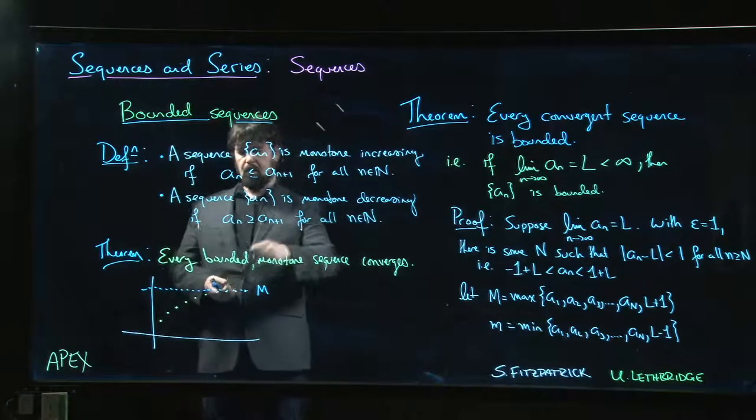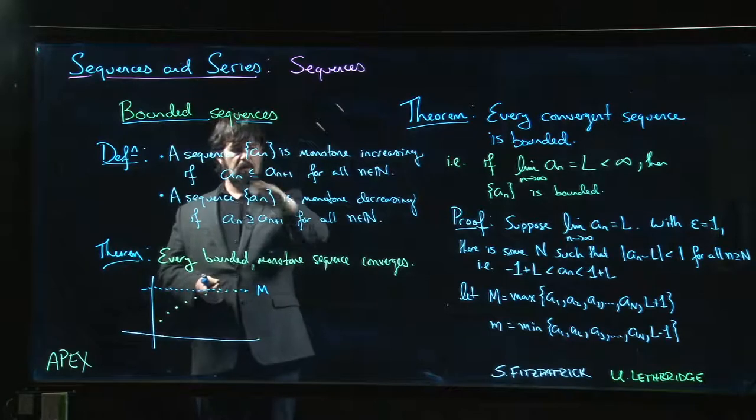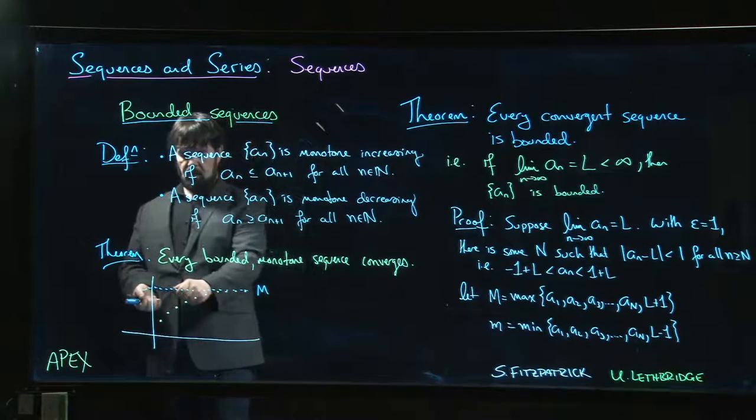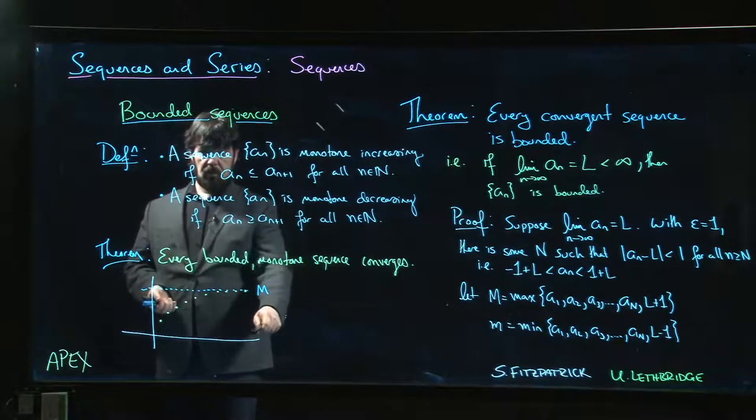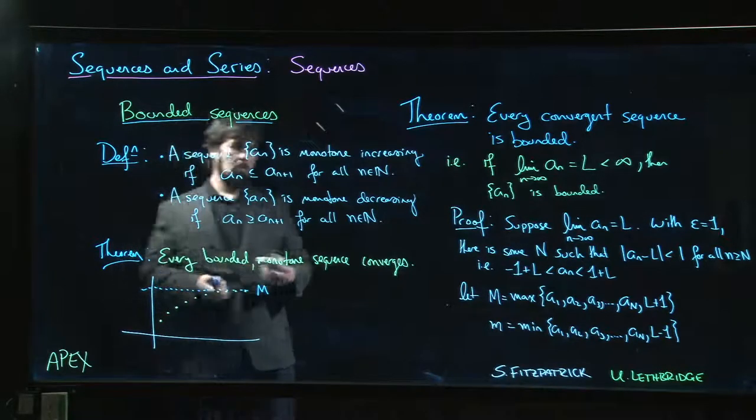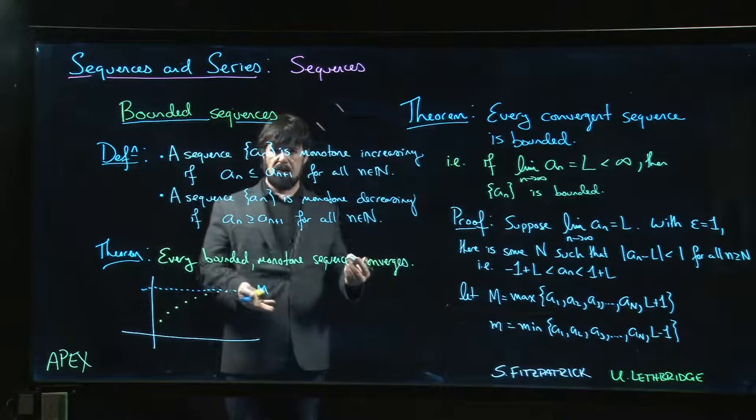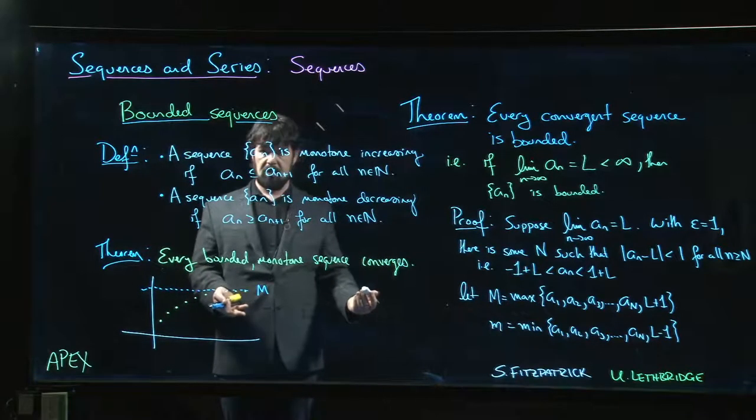And of course, for a sequence which is monotone decreasing and bounded below, it's going to do the same sort of thing. It's going to decrease down until we get closer and closer to that lower bound, but we can't pass it. So we approach whatever the greatest lower bound is, and that's going to be the limit.